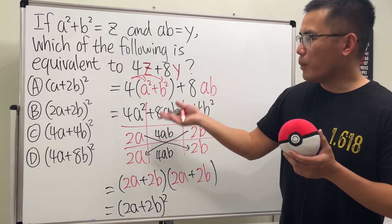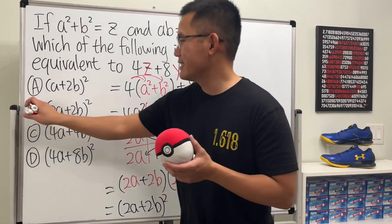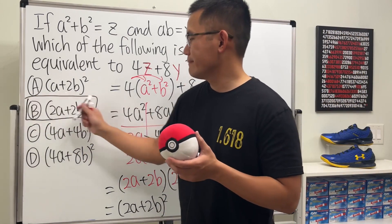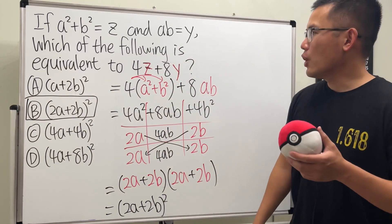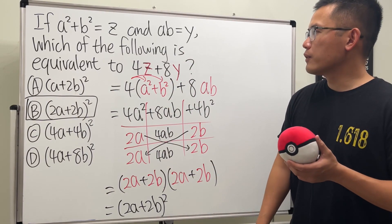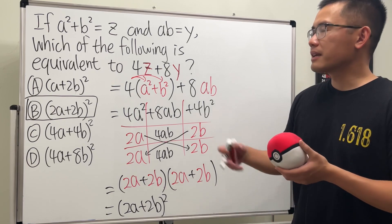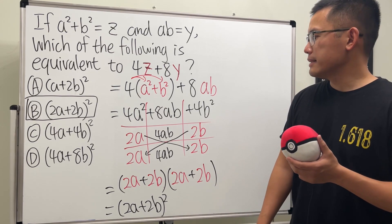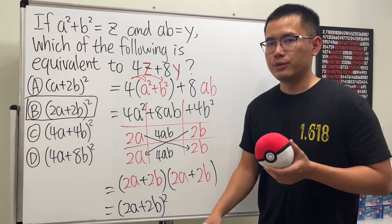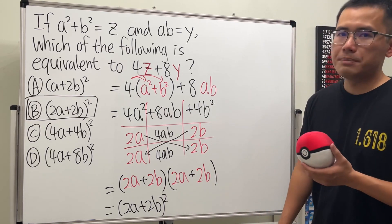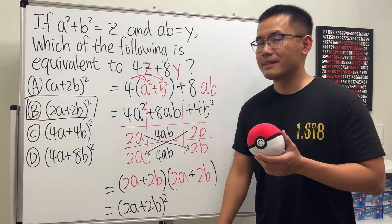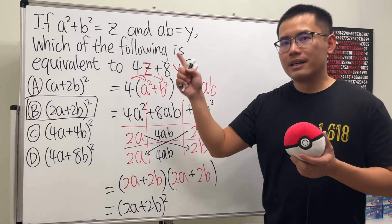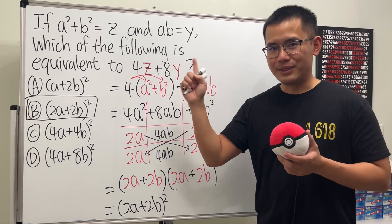And we can go back and say the answer is B. Just like that. So that's pretty much it. Of course, you can try to plug in numbers and get the answer. But I think it's a pretty good exercise if you know how to factor this, not just for the SAT, but also for your algebra class. So go ahead and try the other questions from the playlist. I'll see you guys over there.